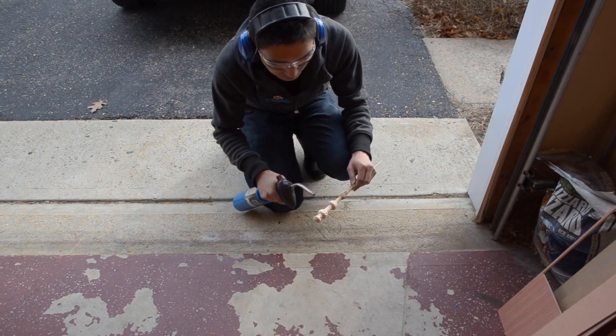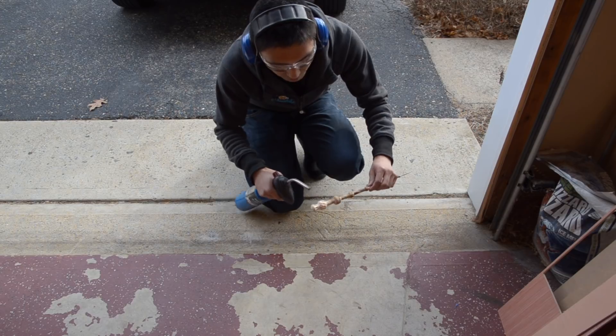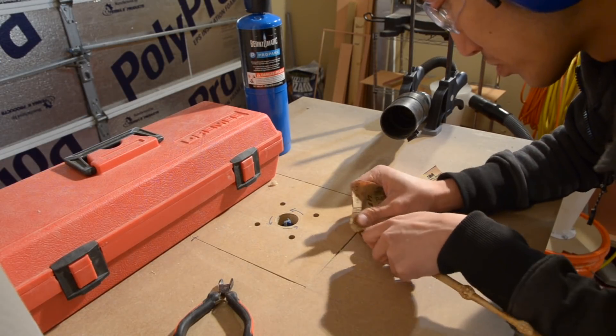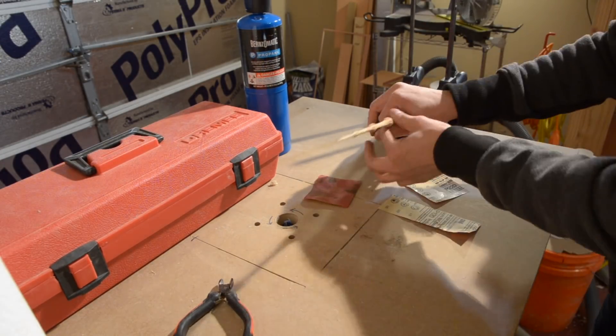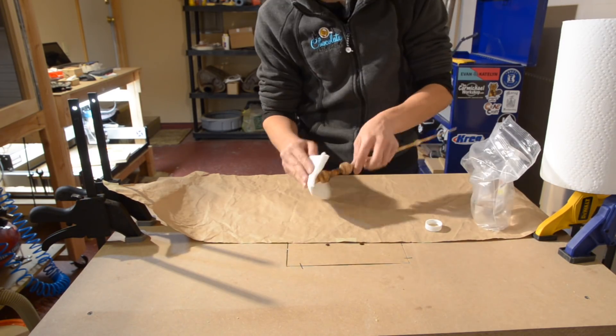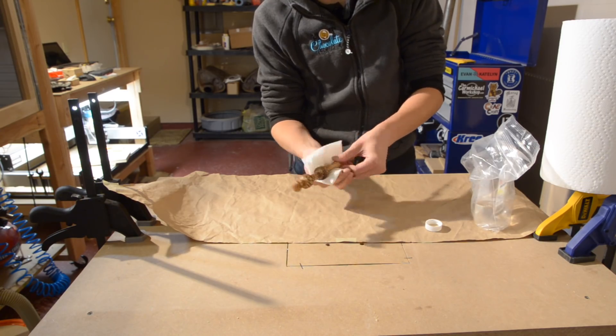Since pine by itself looks pretty bland, I hit this wand with a propane torch and some 400 grit sandpaper to add some contrast and character to the wood. And then, because I was on a deadline, I finished everything off with a bit of mineral oil. This way, there would be no cure time involved and it would preserve the natural feel of the wood.